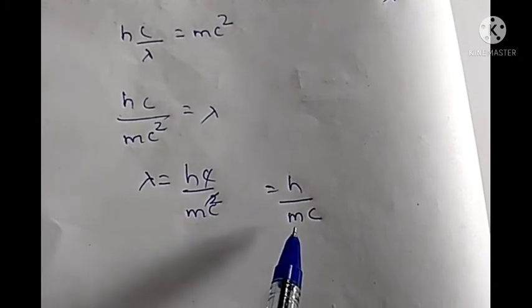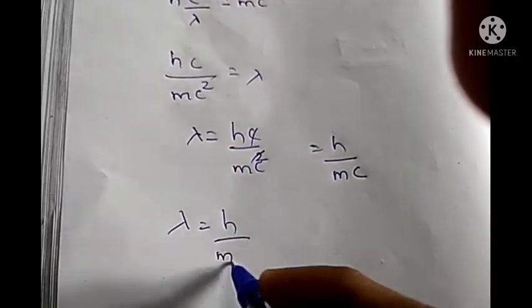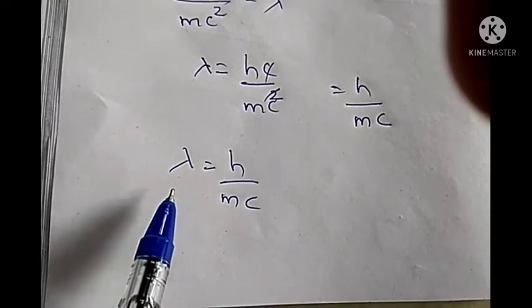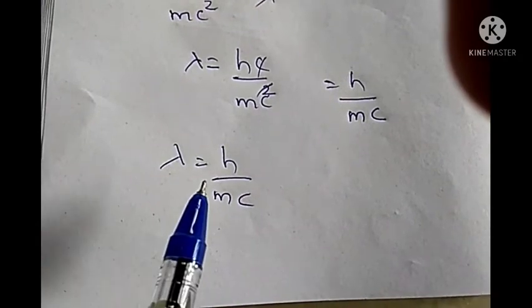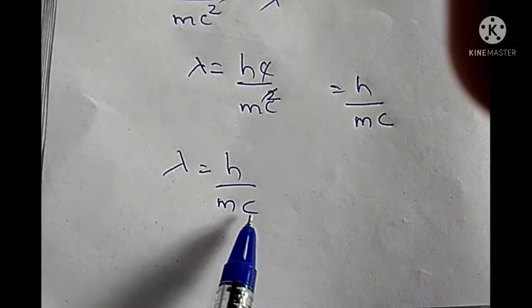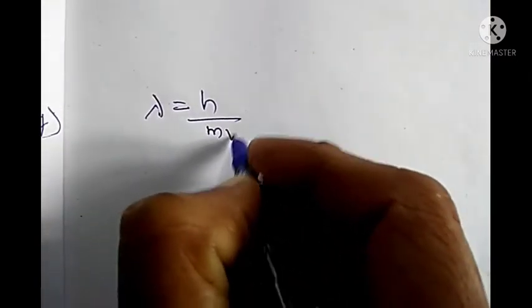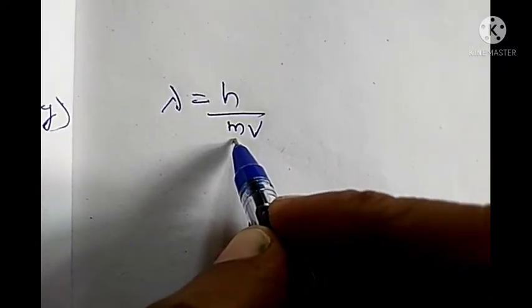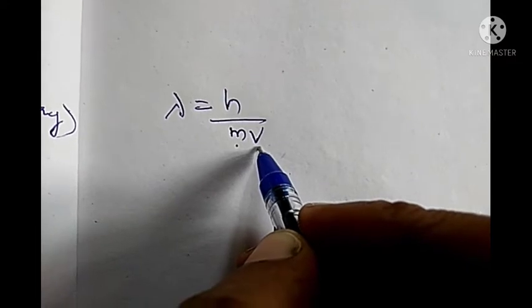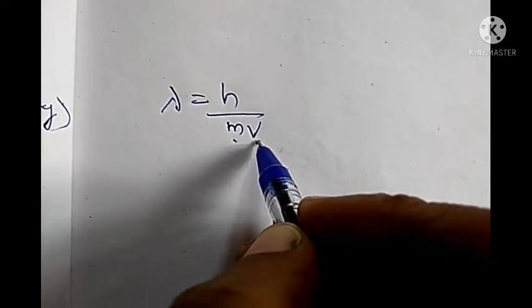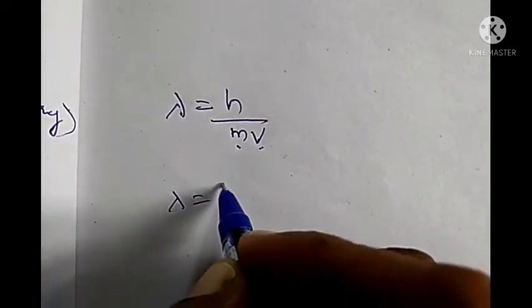Where h is Planck's constant, m is the mass of the photon, and c is the velocity. So λ = h/mc is the equation for calculating the wavelength of a photon. When we apply this to any material particle, we replace c with v, the velocity of that material particle. So the equation becomes λ = h/mv, where m is the mass of the material particle like an electron, and v is its velocity. Since mass times velocity equals momentum, represented by p, we can write λ = h/p, where p = mv.